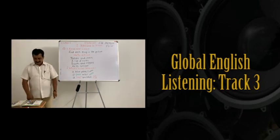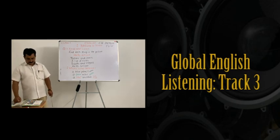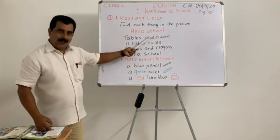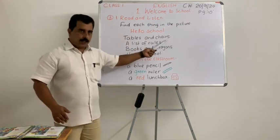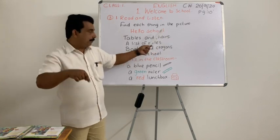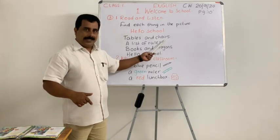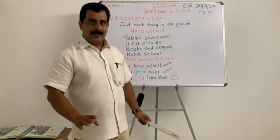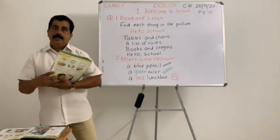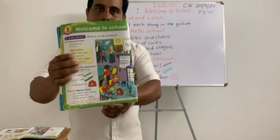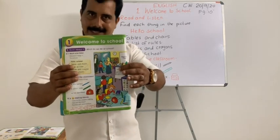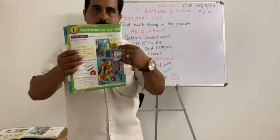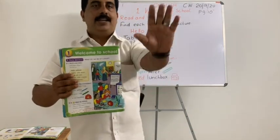Hello school! Tables and chairs, a list of rules, books and crayons — hello school! What is written there? Hello school — you are telling 'hi' to the school. Tables and chairs — did you see? No, you couldn't see now. I know all of you are sitting at home. So let's imagine — we are dreaming that we are in the school. From the picture, look and answer.